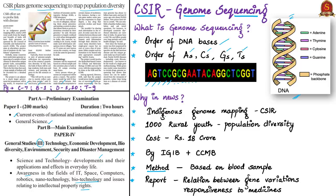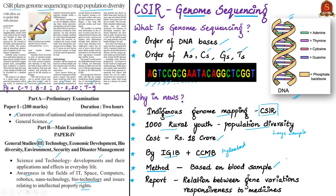The news article highlights an indigenous genetic mapping effort by the Council of Scientific and Industrial Research (CSIR). It will sequence the genomes of nearly 1,000 rural youth from across India, representative of the country's population diversity. This is the first time such a large sample of Indians will be recruited for a detailed study. The project would cost Rs. 18 crores and involve collaboration between the Hyderabad-based Centre for Cellular and Molecular Biology and the Institute of Genomics and Integrative Biology. Genomes will be sequenced based on blood samples, and every person will receive a report.